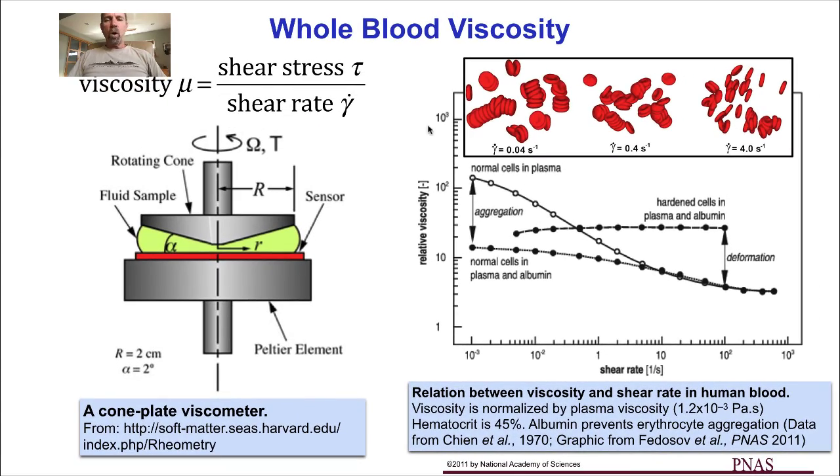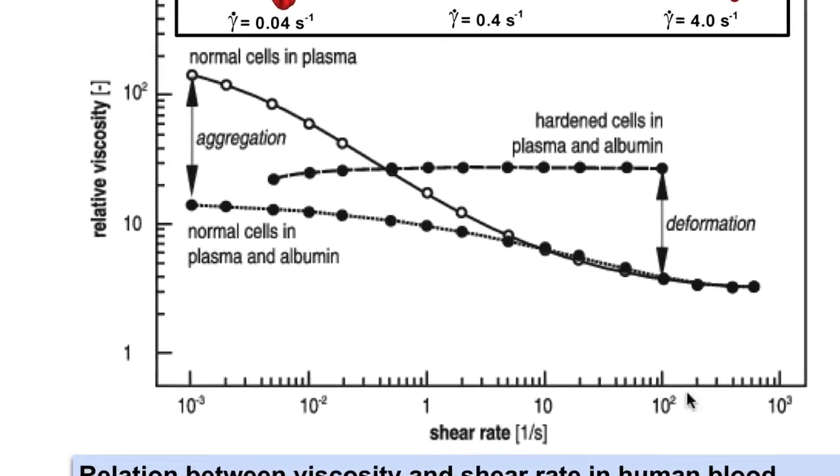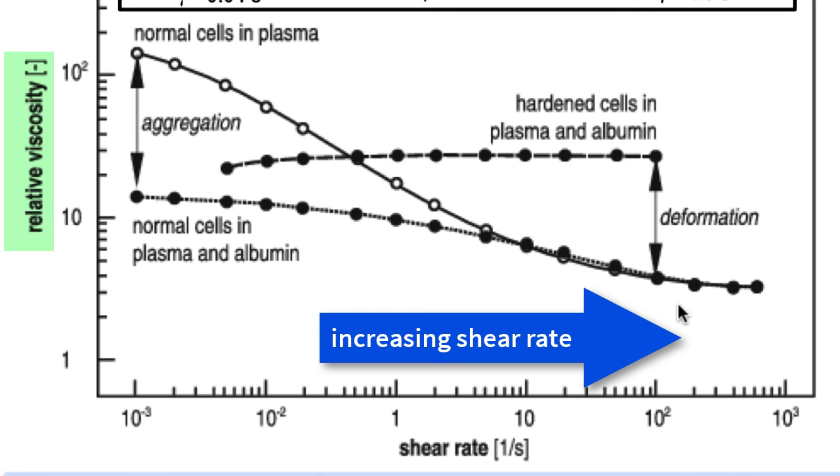The viscosity of whole blood is not constant. As the shear rate increases, the viscosity of whole blood decreases. Like paint or ketchup, whole blood is a shear thinning fluid. There are two reasons for this property that are shown in the experiment.